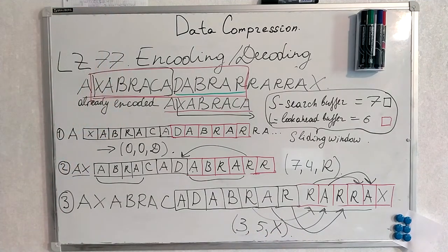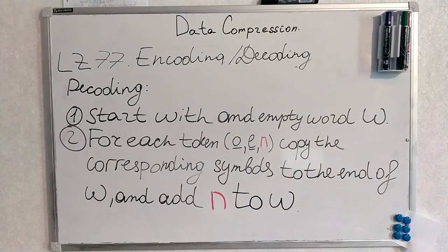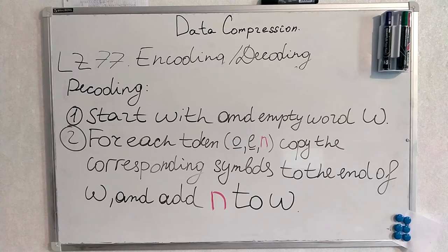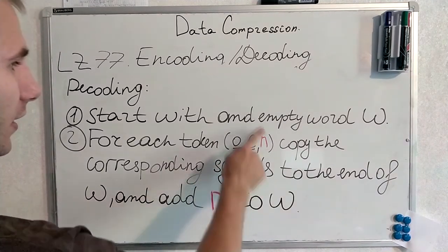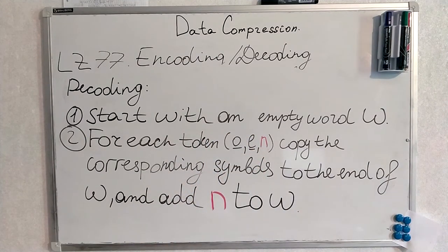This is the outline for the decoding part. And it consists of two very simple steps. I have written it formally. And I highly recommend you to write it down and then follow my steps in the example. So, we start with an empty word W. For each token offset length and some new symbol, I have marked it with N. Copy the corresponding symbols to the end of W. And add symbol to W. And that's it. I will write down the example now.